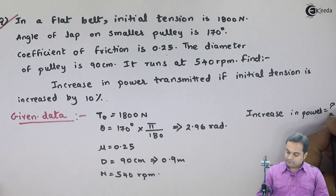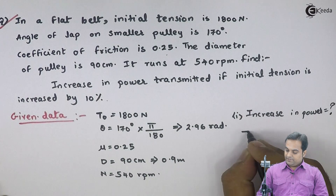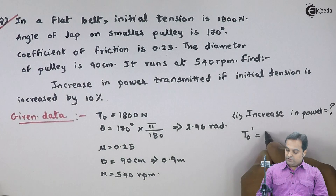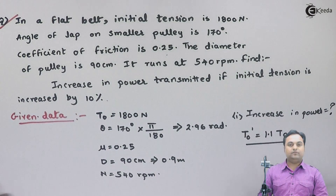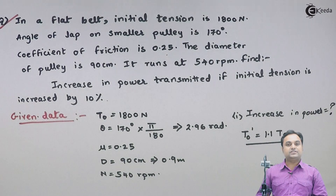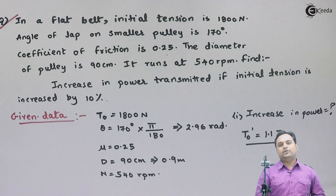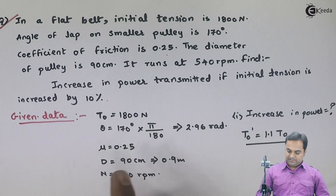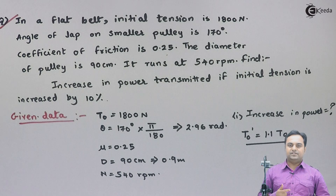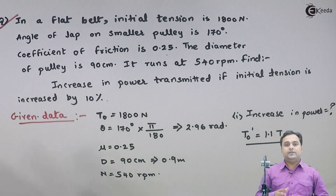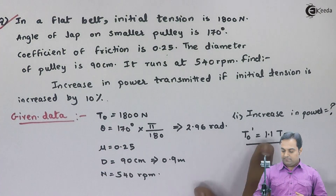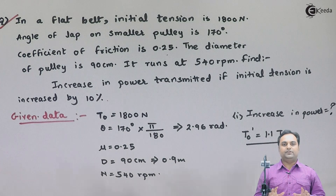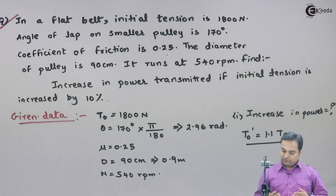If the initial tension is increased by 10%, it means t0 is increased by 10%. I'll denote the new value as t0 dash, so it is 1.1 times t0. Since the question asks us to calculate the increase in power, I will first calculate t1 and t2 using the original tension of 1800 Newton, then calculate initial power, then increase by 10% and compare the two power values.